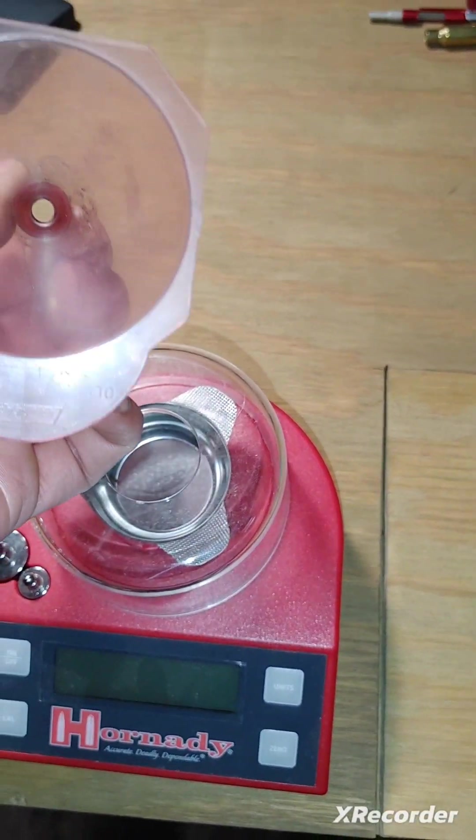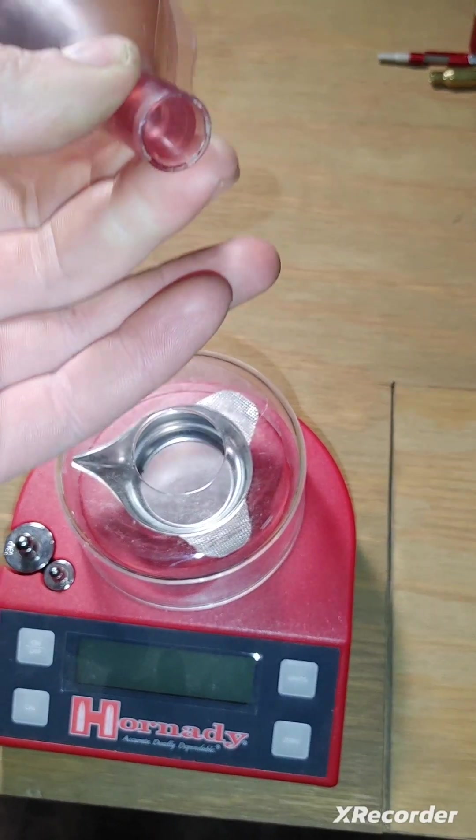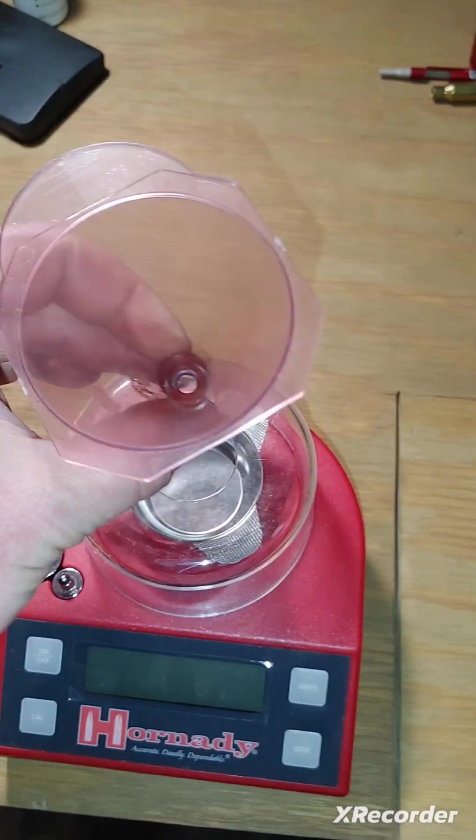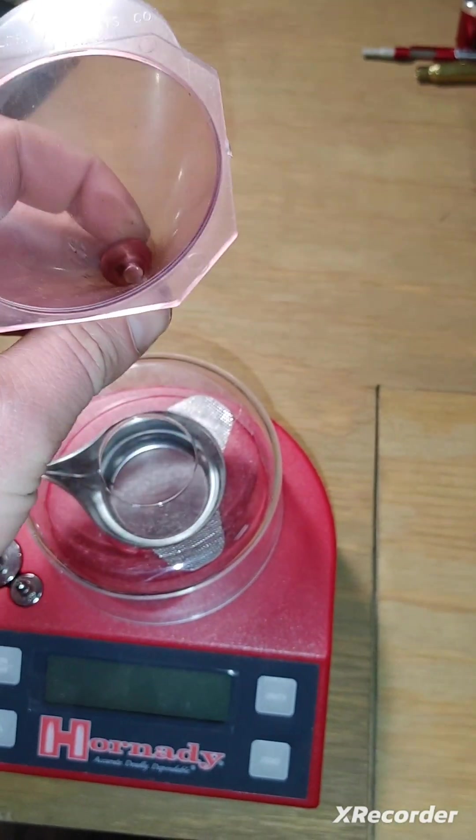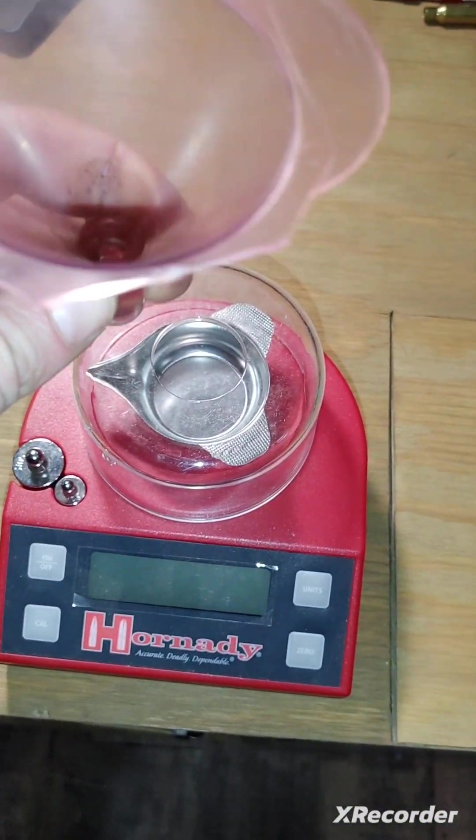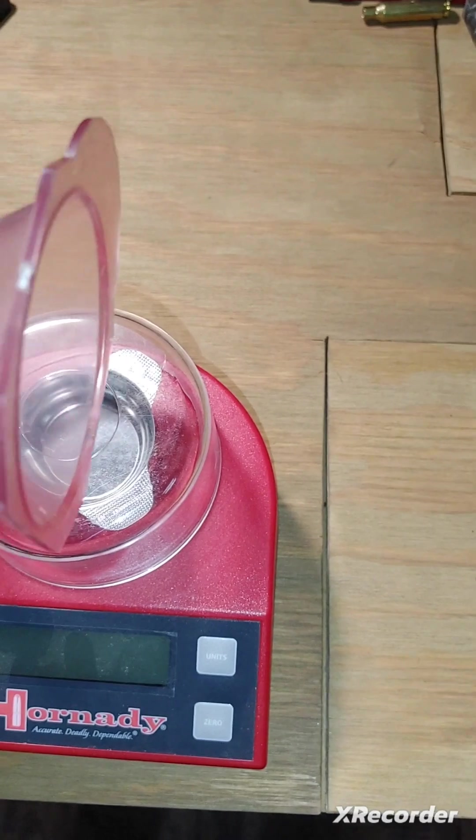So this is a powder funnel. Basically this just goes over top of your piece of brass and you pour powder in there so you don't make a mess right. I believe you can pick this up also for like five bucks.